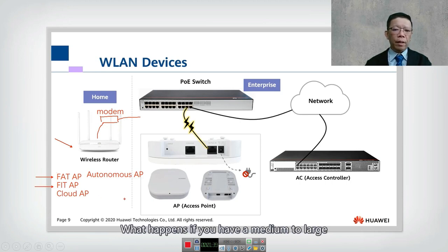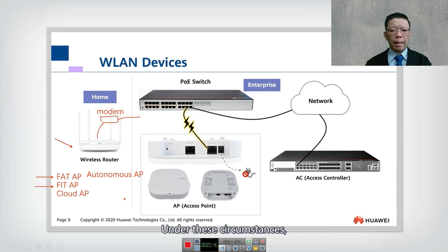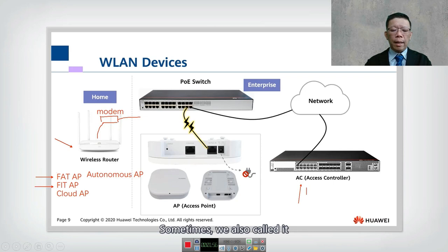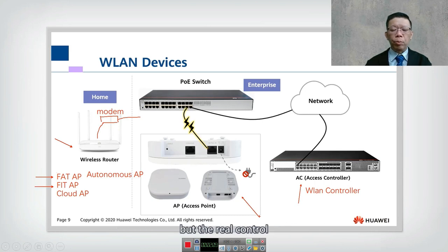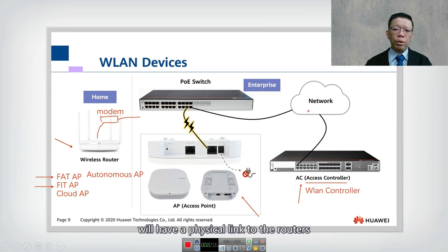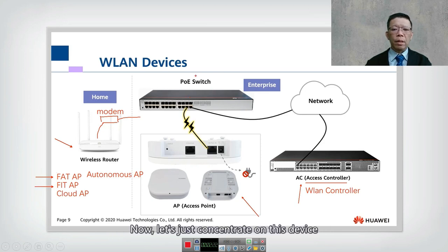In a medium to large enterprise environment with tens or hundreds of APs, you need something more scalable. For scalability, we need a device called the AC — the wireless LAN controller, or WLC. The AC controls the APs; the APs handle encryption and decryption of data, but the real control resides on the AC. The AC has a physical link to routers or switches before connecting to the APs.